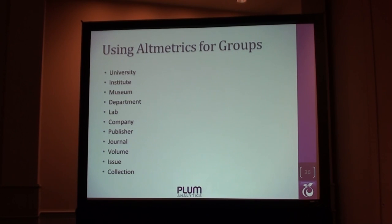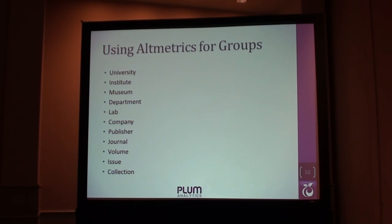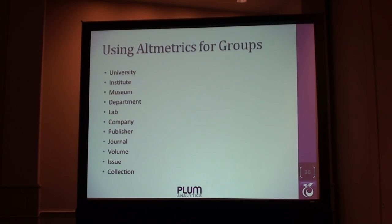We measure the artifacts, and we also take those and use them to measure researchers. But then we continue to go up the line — measuring labs, departments, in Smithsonian's case museums, and in a journal's case the journals and issues themselves. Just having a flexible way to group things that matter to people. How is my lab doing against other labs? How are my researchers doing compared to the rest of their lab? Being able to have that available is really important.